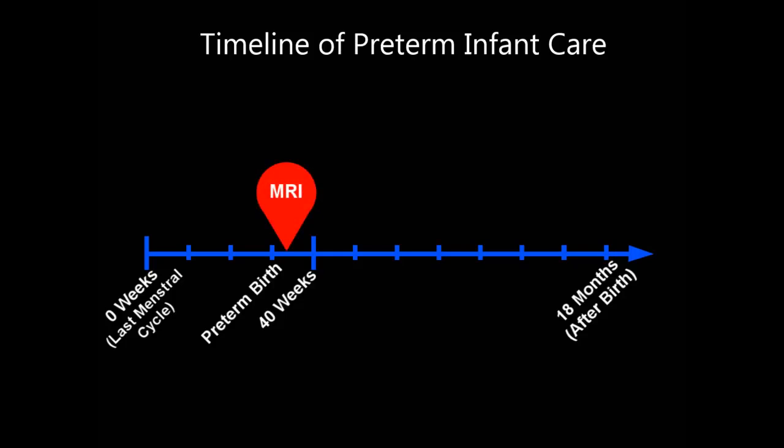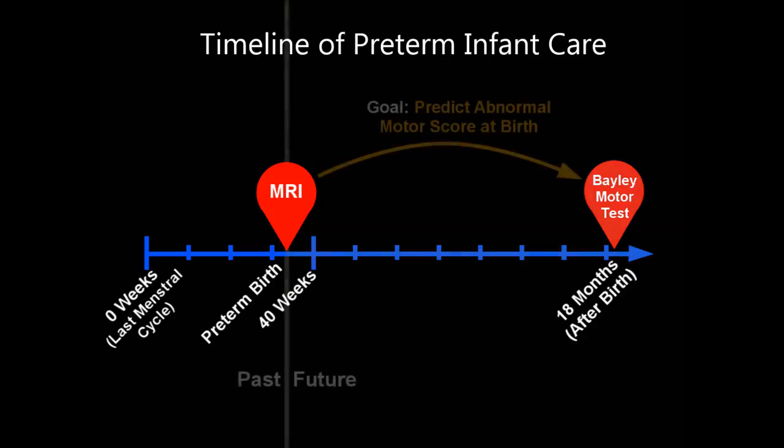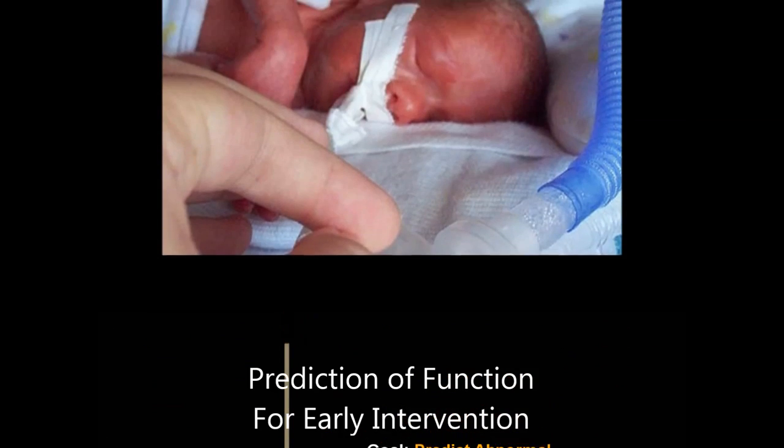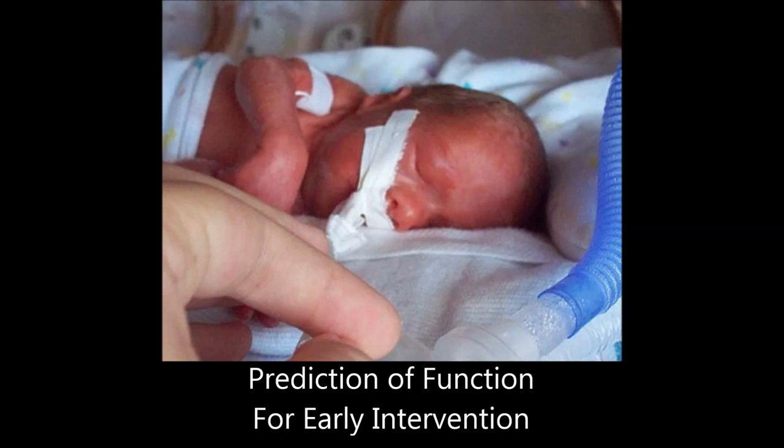In this paper, we propose a method to predict motor dysfunction using magnetic resonance imaging at birth. Motor function outcomes can be assessed at 18 months after birth using the Bailey Scales of Infant and Toddler Development. However, accurate prediction of this score at birth could enable more rapid identification of infants who would benefit from rehabilitative interventions.